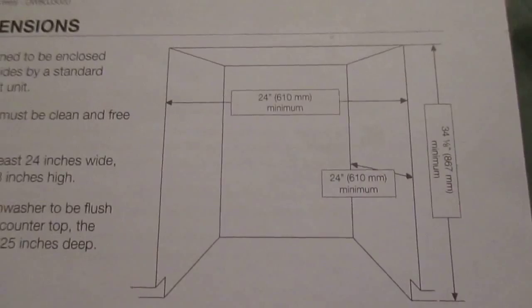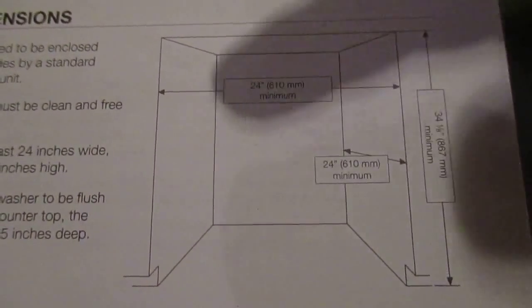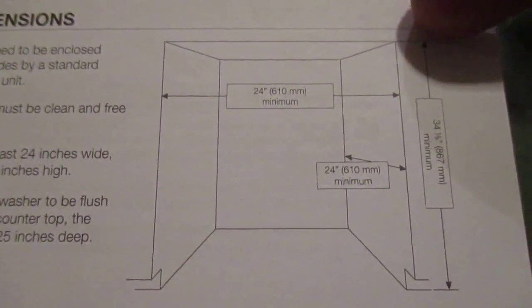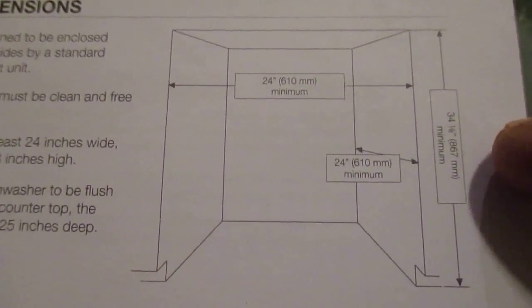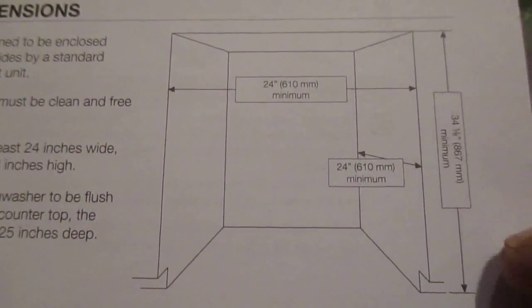Our owner's manual for the dishwasher tells us that it should be an opening 24 inches wide and 34 and 1/16 inches high minimum.